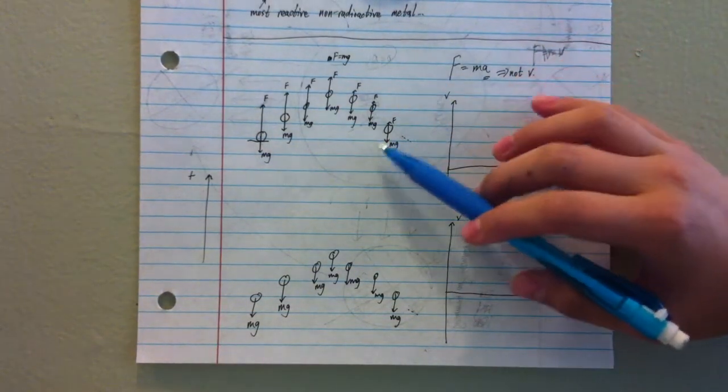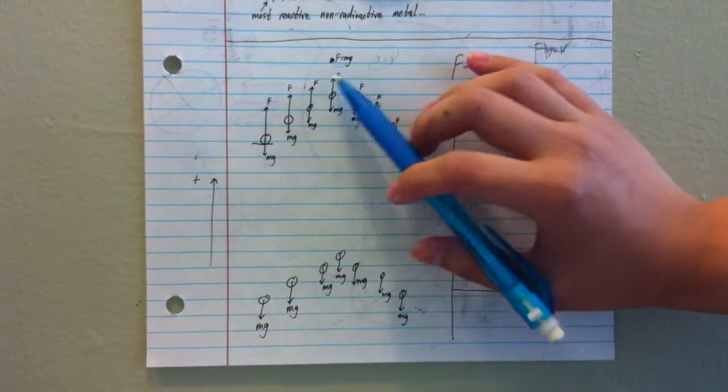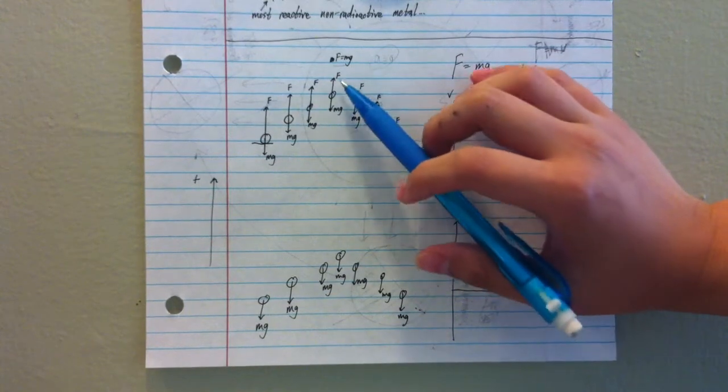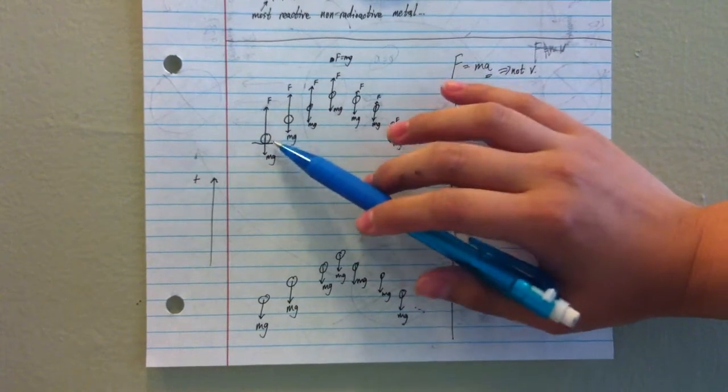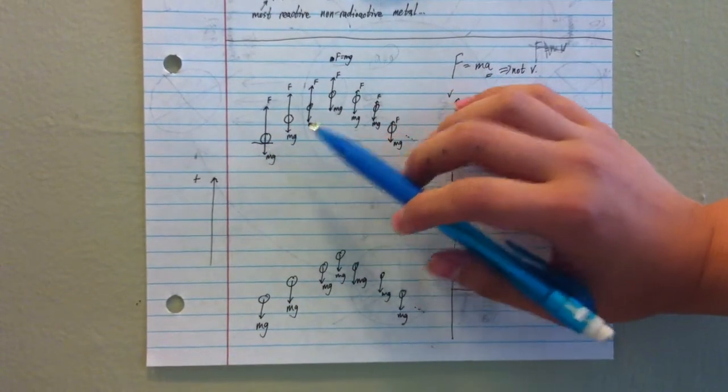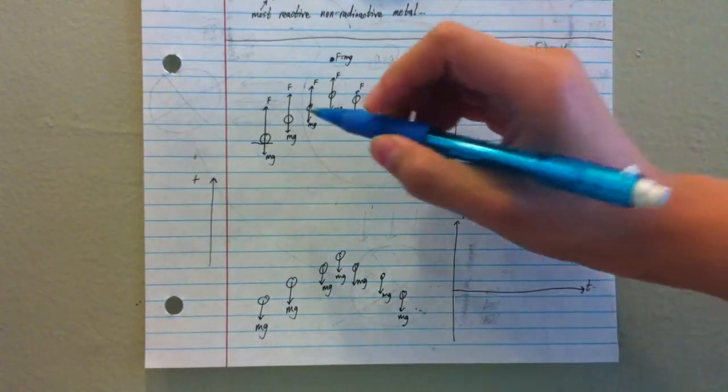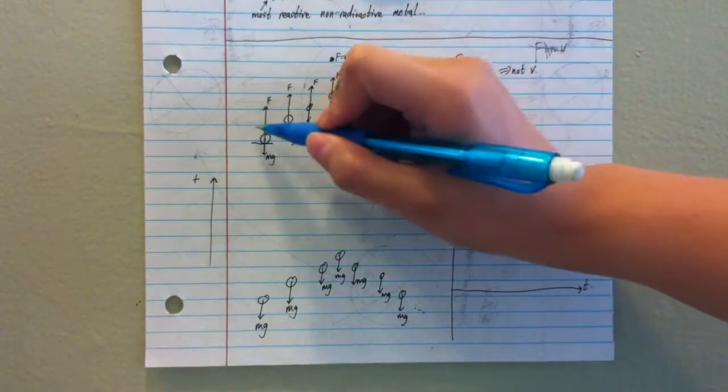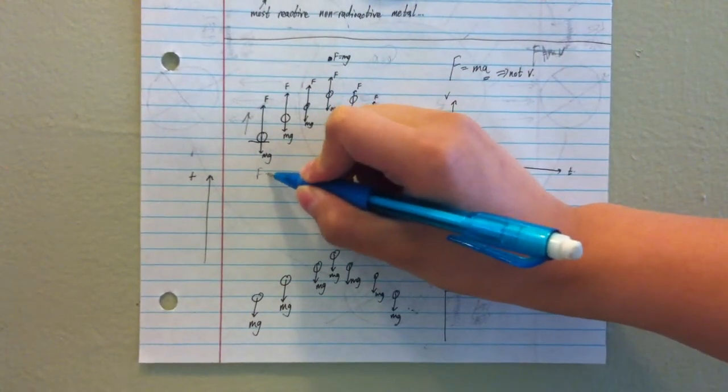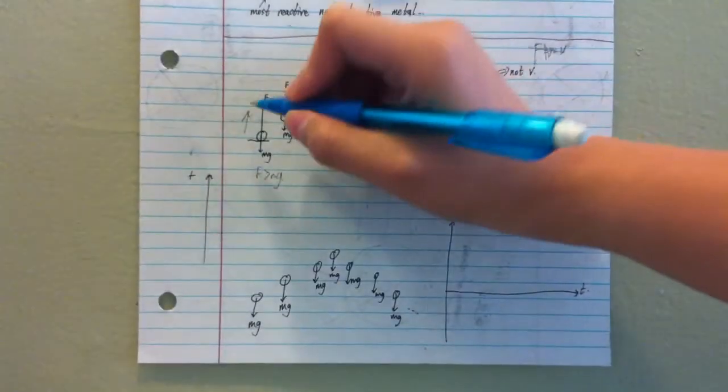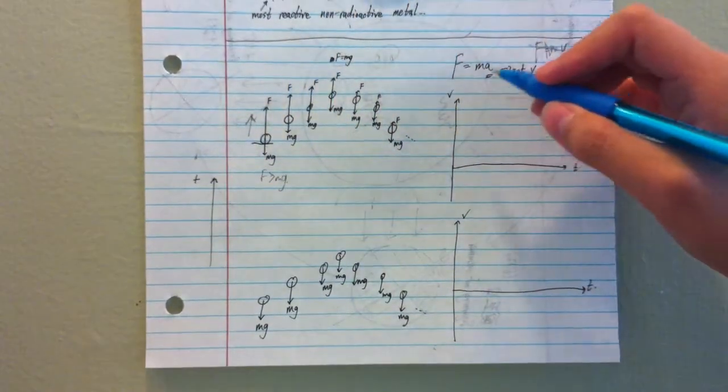So basically, for this misconception, if F gradually decreases and at the very top F balances with gravity, therefore according to this common misconception and F equals MA, the acceleration should be up because F is greater than mg in this case. Therefore, the ball should be accelerating up due to F equals MA.